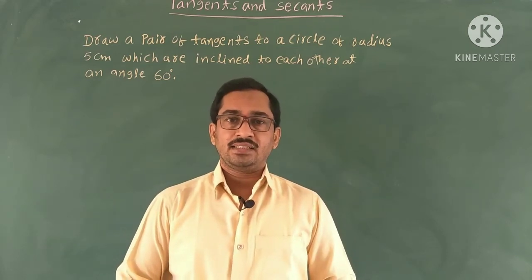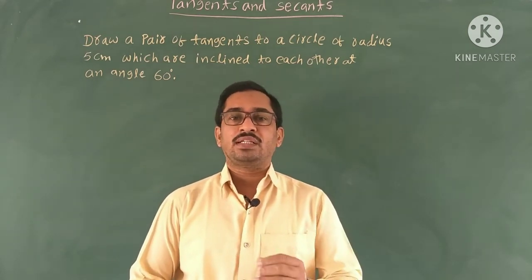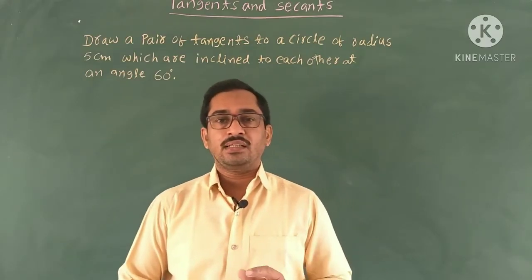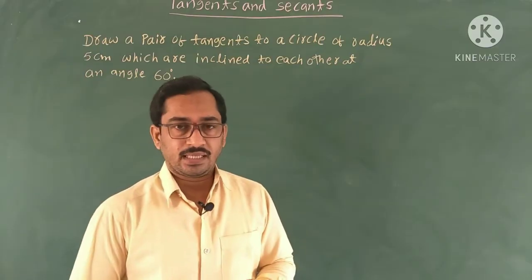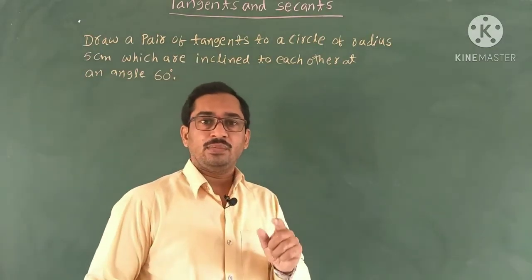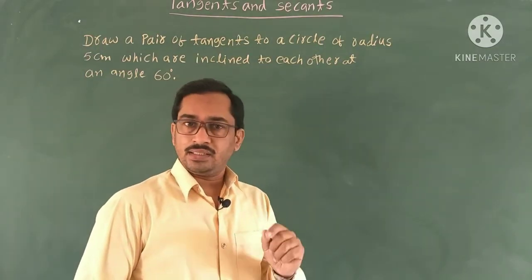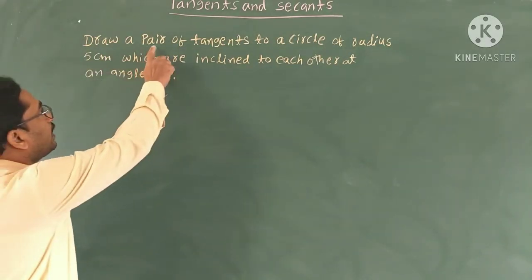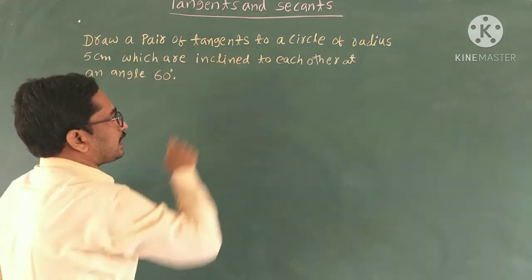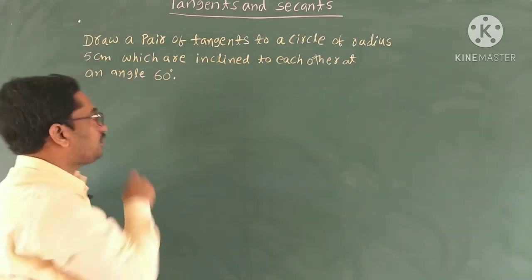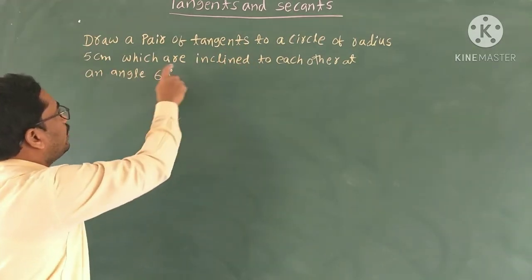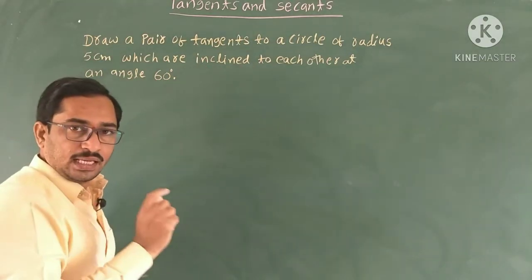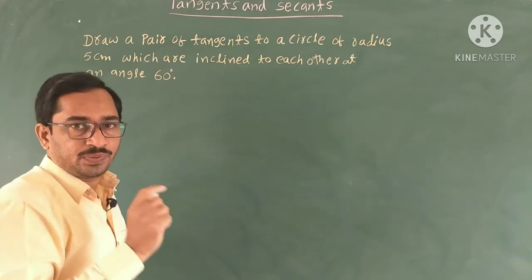In chapter Tangents and Secants, in this session I am going to explain one more interesting construction: construction of tangents to a circle where the angle between the tangents is 60 degrees. This is an important question from an exam point of view. The question is: draw a pair of tangents to a circle of radius 5 centimeters which are inclined to each other at an angle of 60 degrees, meaning the angle between the two tangents must be 60 degrees.